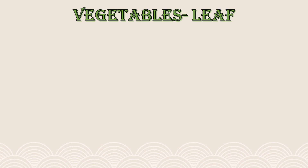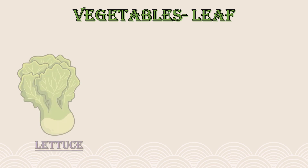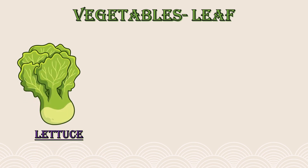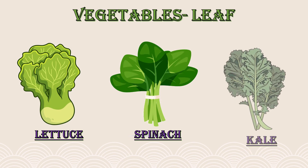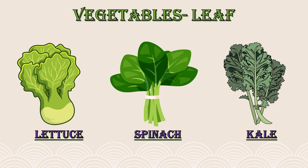There are some vegetables which are actually the leaf of a plant and we use and eat them. For example, lettuce, spinach, and kale. These are some of the leaves that we eat as vegetables.